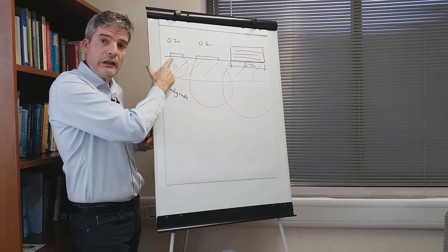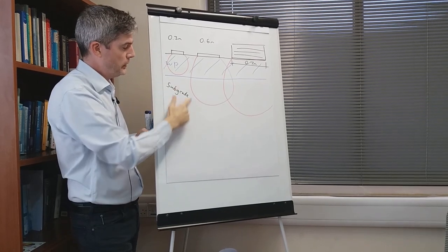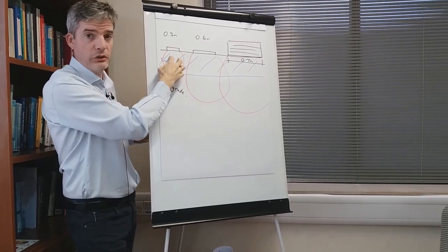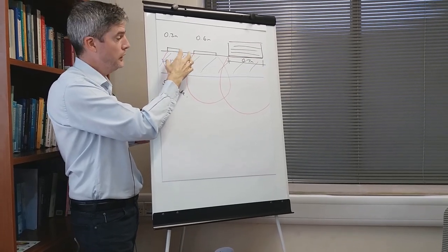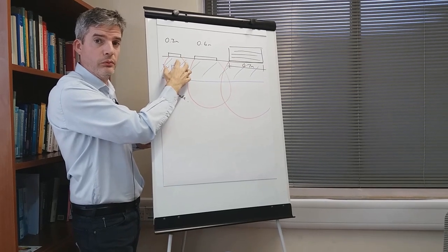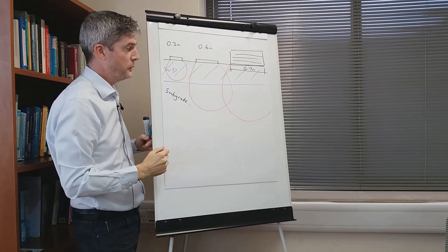That small plate is clearly inadequate to verify the design of the working platform because it does not have the correct depth of influence. This could be used as a quality control test just to check whether the granular layer is as was assumed in the design and has been compacted according to the specifications.